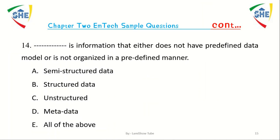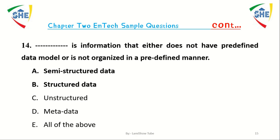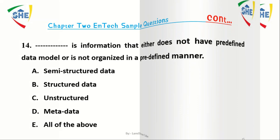Question number 13: Dash is information that either does not have a predefined data model or is not organized in a predefined manner. A) Semi-structured data, B) Structured data, C) Unstructured data, D) Metadata, E) All of the above.